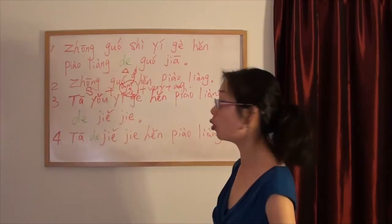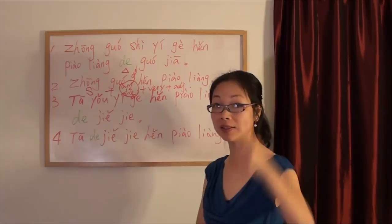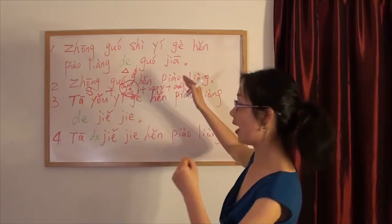中国很漂亮. Not 中国是很漂亮. That is not correct. Because when you meet the sentence pattern subject plus very plus adjective, adjective is the end of the sentence.